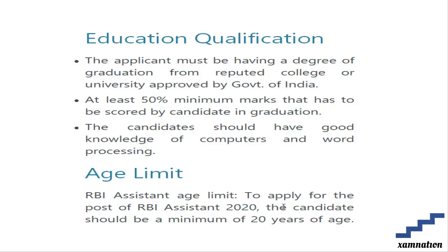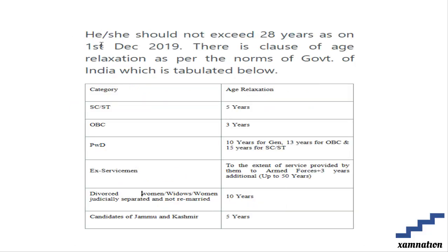As of 1st December 2019, candidates should be between 20 and 28 years. There are age relaxations for different categories: for SC/ST the relaxation is 5 years, for OBC it is 3 years. For persons with physical disability, it is 10 years for General, 13 years for OBC, and 15 years for SC/ST. For ex-servicemen, the relaxation is the total years of service in the armed forces plus 3 additional years.